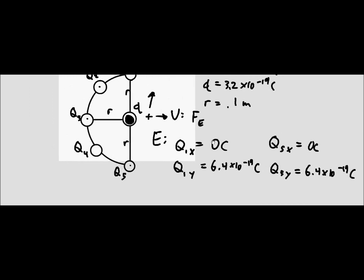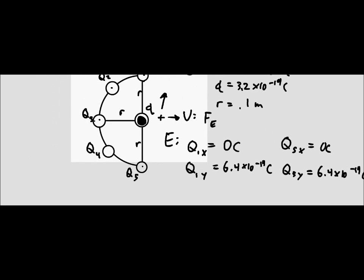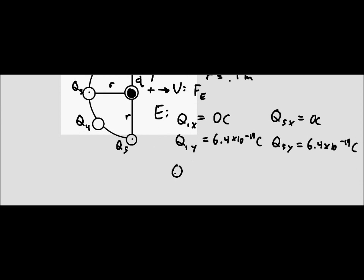Okay? And we can do the same thing for the 5th charge, which is the one down here. And so that is going to be 6.4 times 10 to the negative 19 coulombs. Then what we're going to do is find q3 just because it is simple because it's only on the x-axis. So q3, its y is 0 coulombs because it has no y component, and its x component is 6.4 times 10 to the negative 19 coulombs.